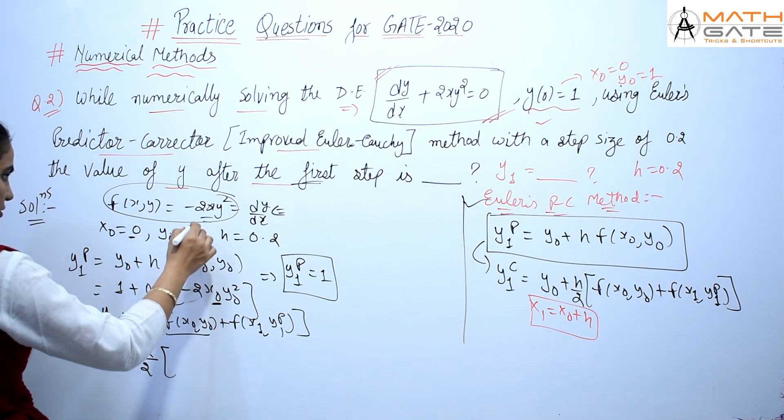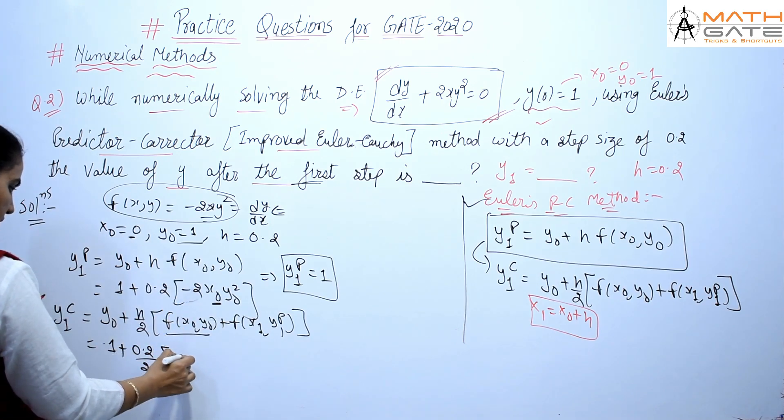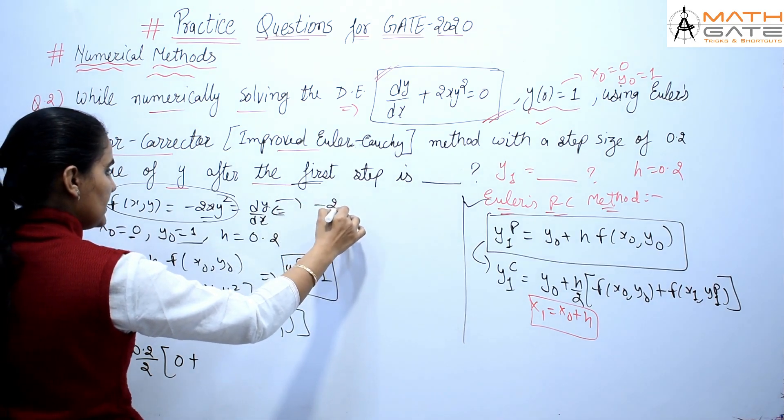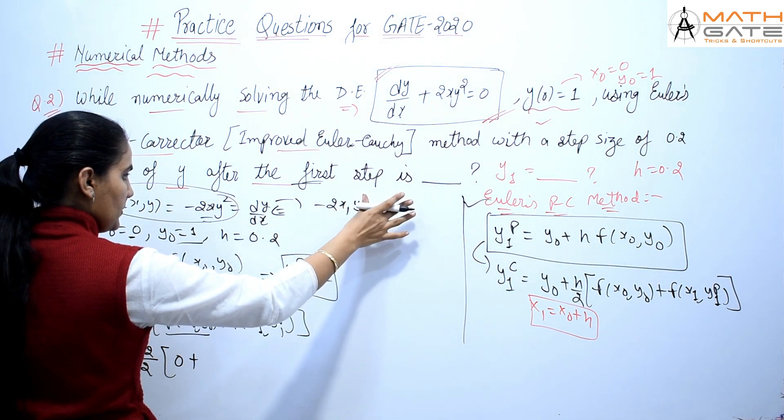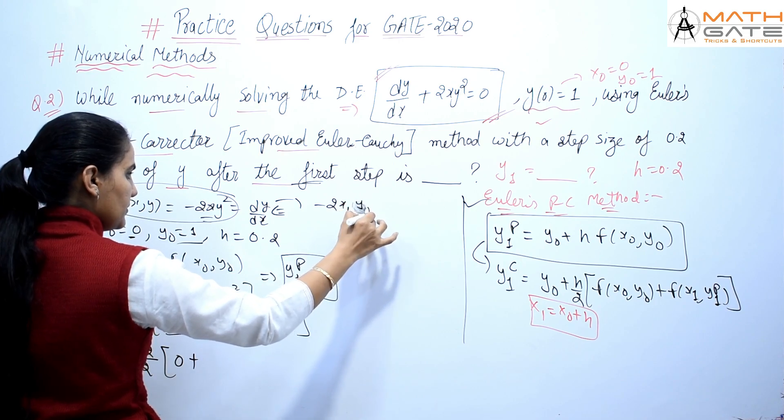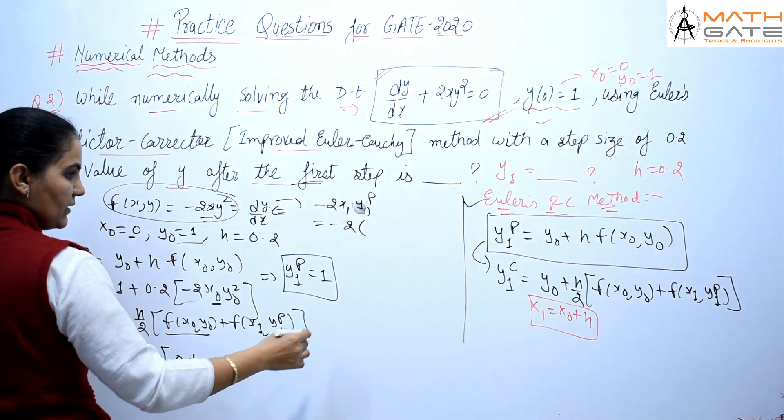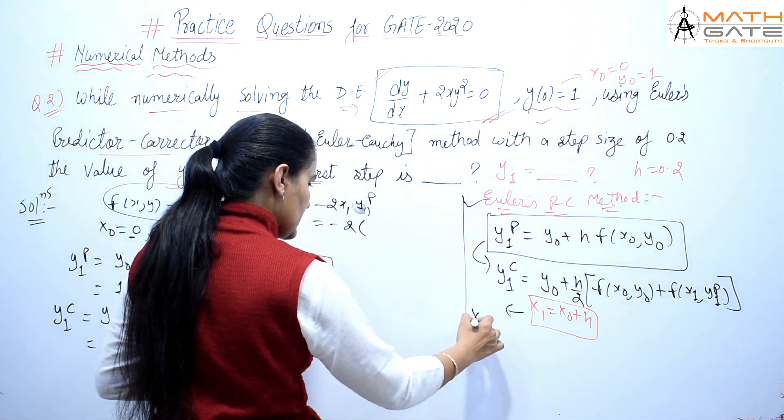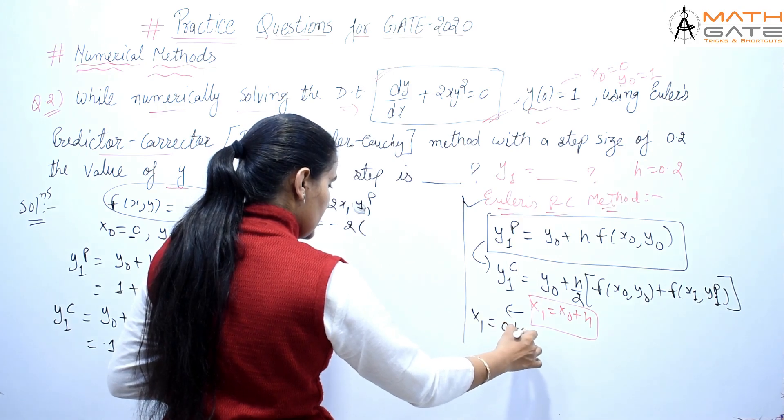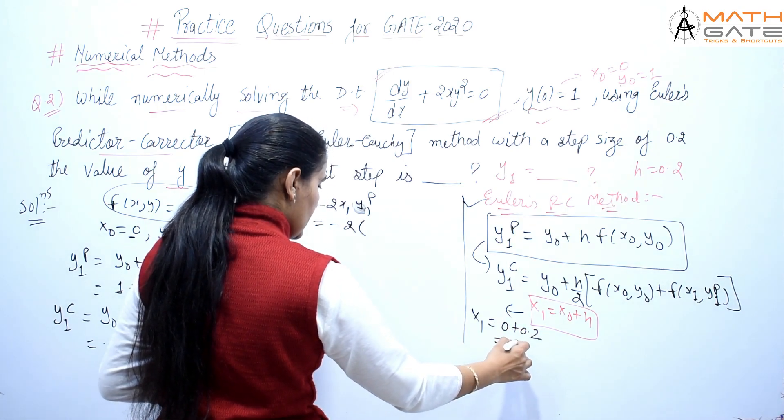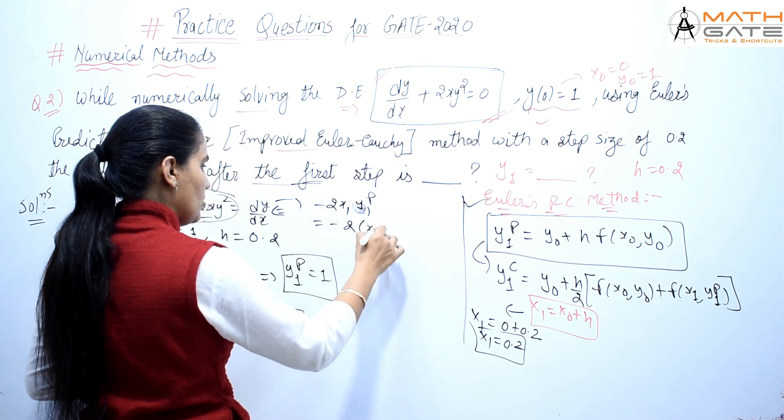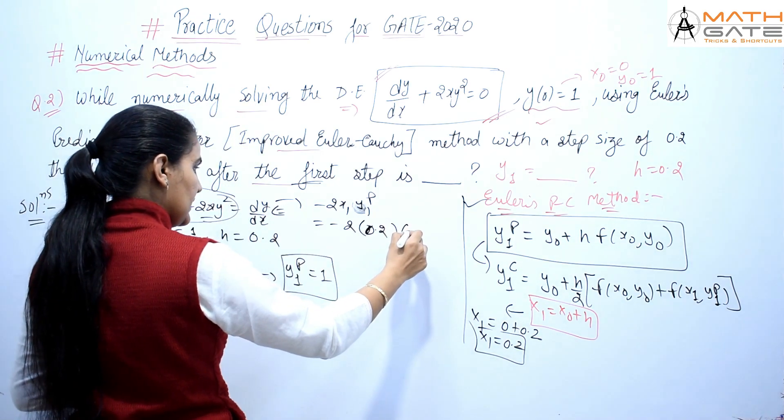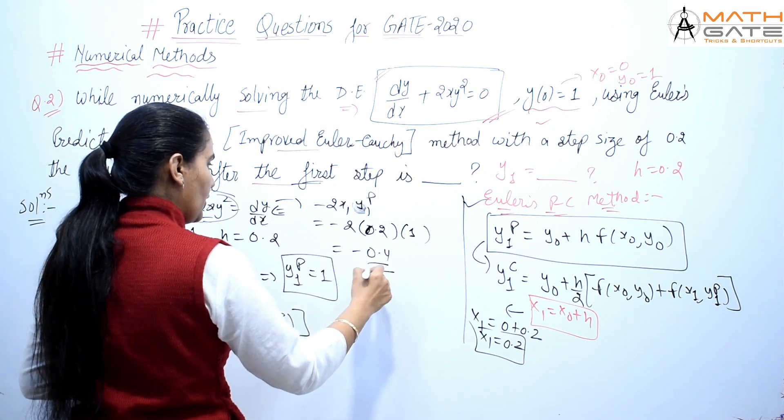This equals 1 + 0.2/2[f(x₀, y₀) + f(x₁, y₁ᵖ)]. f(x₀, y₀) = 0, plus f(x₁, y₁ᵖ) will be -2x₁·(y₁ᵖ)². I will write -2x₁. x₁ = x₀ + h, so x₁ = 0 + 0.2 = 0.2. So this will be 0.2 × (y₁ᵖ)² = 0.2 × 1 = -0.4.